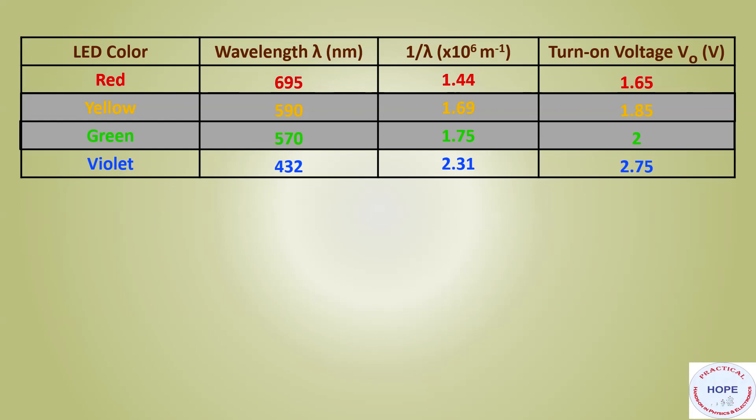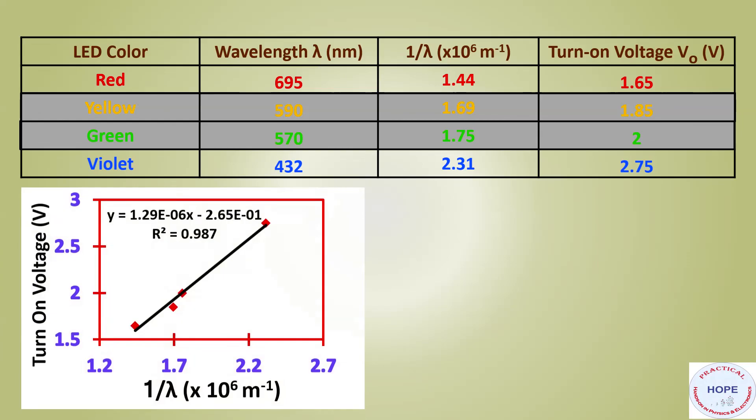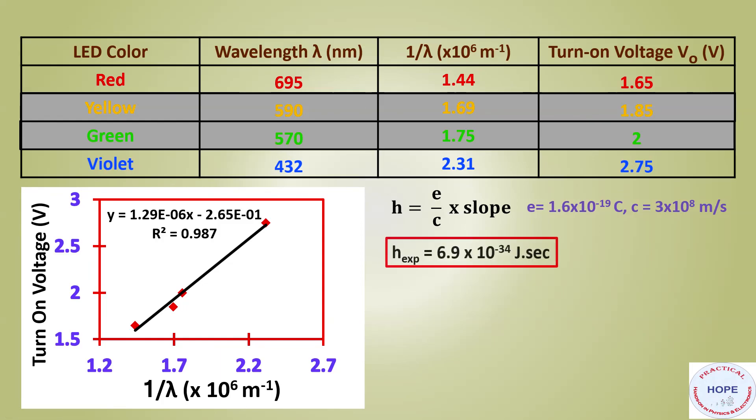We can plot a graph between 1/lambda and turn-on voltage. The graph should be linear. The slope of the curve is 1.29 into 10 raised to the power minus 6. So Planck's constant can be evaluated using this formula: h equals e/C into slope. So e is the electronic charge, C is the speed of light—values are given here. If you put all these values e, C, and slope in this expression, the experimental value of h is 6.9 into 10 raised to the power minus 34. The theoretical value of Planck's constant is 6.62607015 into 10 raised to the power minus 34. So error in the measurement is less than 5%, which is very good.